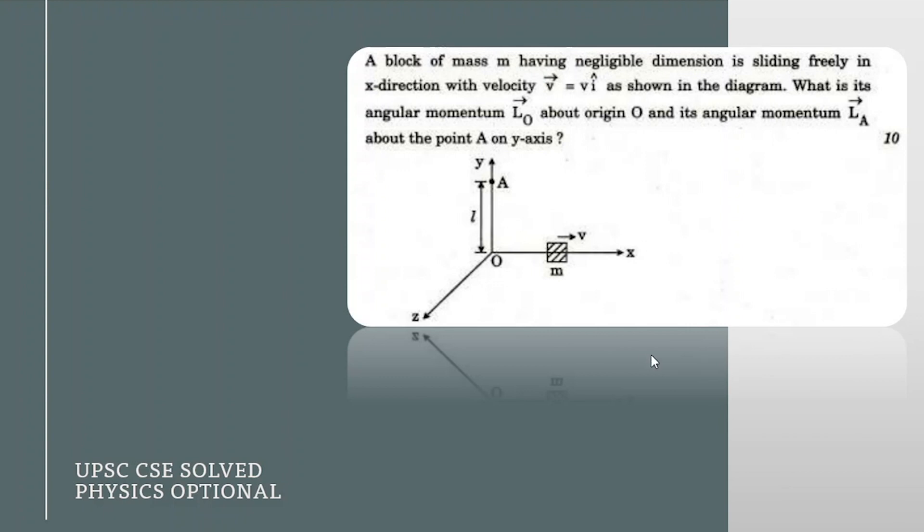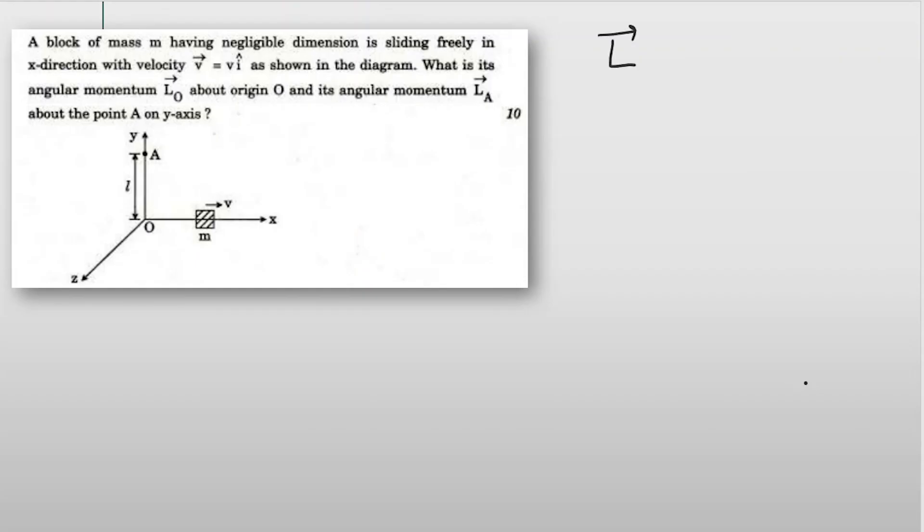Here we have to find out the angular momentum at two points: about O and about A. Angular momentum can be written as L equals R cross P, where R is the position vector and P is the momentum vector. We can further write this as M times R cross V, so we can take out this M. In the first case we have to find out the angular momentum about origin.